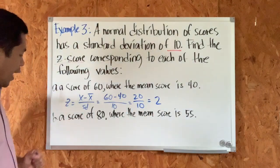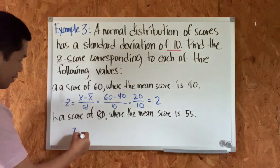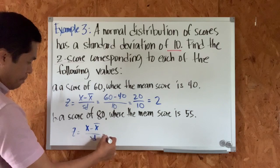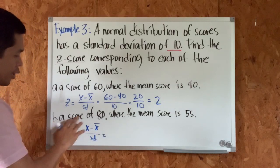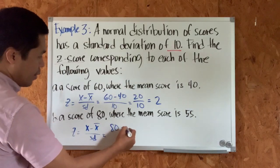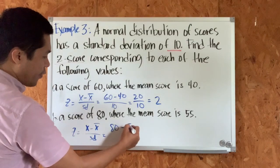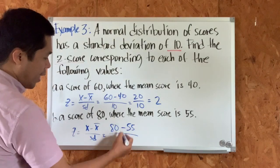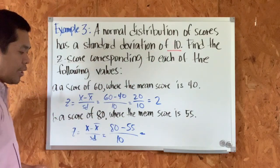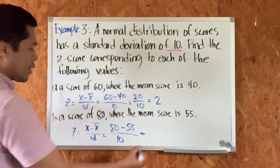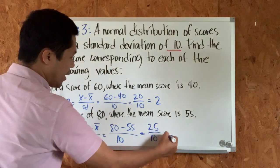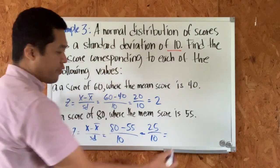For letter b: a score of 80 where the mean score is 55. Using the formula, 80 minus 55 divided by the standard deviation of 10. So 80 minus 55 equals 25, divided by 10, and that gives us 2.5.